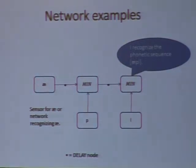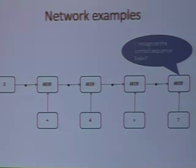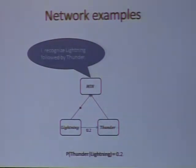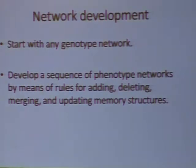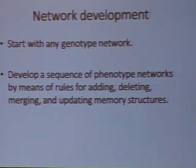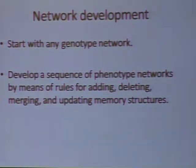We have the phonetic sequence 'apple' denoted by a node. We can also remember all kinds of knowledge, like sequences — for example, 3 plus 4 equals 7. We also have mechanisms for developing these networks automatically. We can start with any network we call a genotype, then apply rules for developing a sequence of networks called phenotypes by means of adding, deleting, merging, and updating these memory structures.